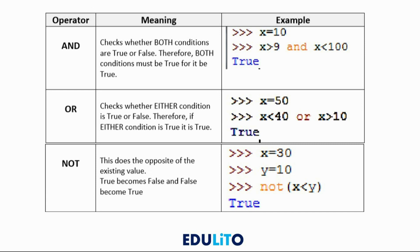However, if one of them was false, it would be false overall. 'Or' is slightly different — one can be true and the other can be false, and it still returns true. So if x equals 50, x is less than 40 is false, but x is greater than 10 is true because 50 is greater than 10. With 'or', only one needs to be true. Finally, 'not' is the reverse of what it was originally — if x is 30 and y is 10, x is less than y is false, but because 'not' is in front of it, it reverses and becomes true.